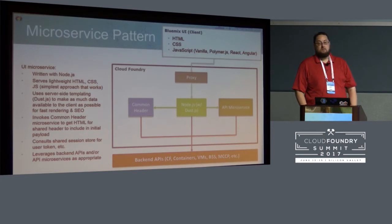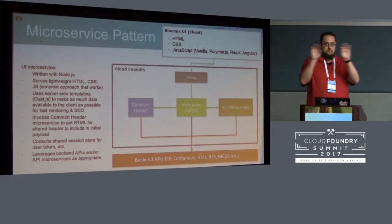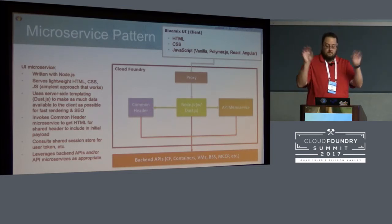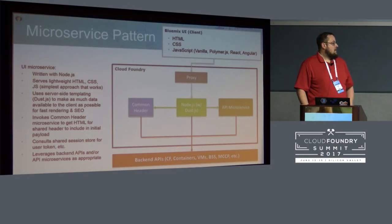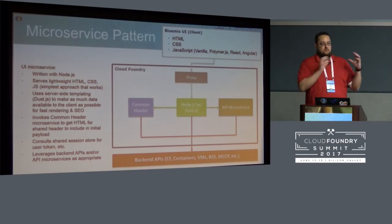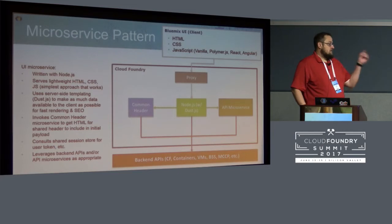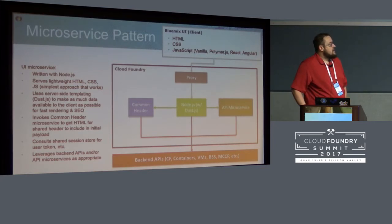There's a common header microservice that was added. All of our UI microservices call that to get the HTML for the top row — I'll show a screenshot shortly. We introduced a shared session store. It wasn't required with our Java app because you just have an in-memory session, but when you have distributed apps and want to share things like user tokens, we had to add Redis to the mix. These UI microservices can then call any of the other back end APIs or other API microservices.